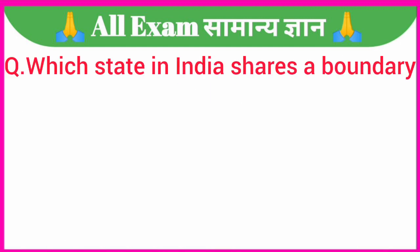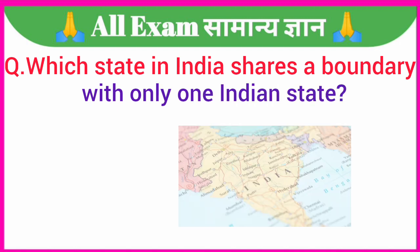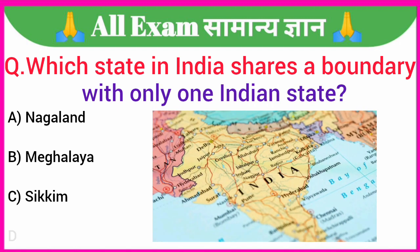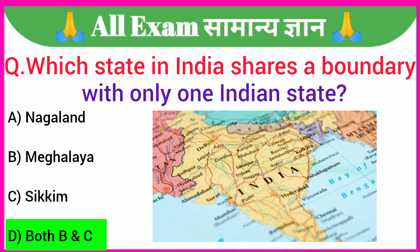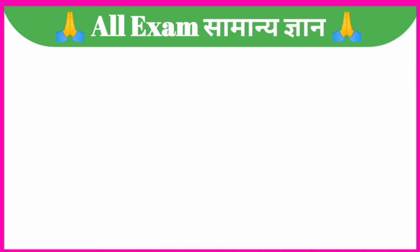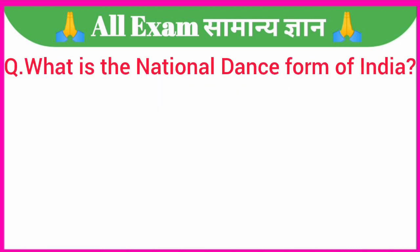Which state in India shares a boundary with only one Indian state? A. Nagaland, B. Meghalaya, C. Sikkim, D. Both B and C. Your correct answer is option D — both B and C.